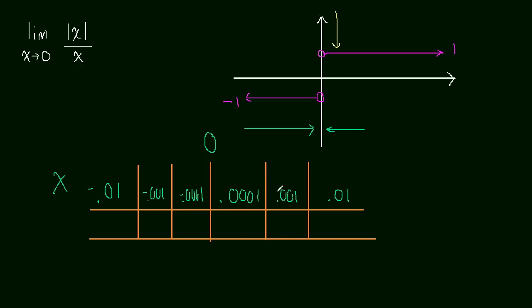So these numbers, the positive numbers from the right side, we're squeezing in on 0. And from the left side of 0, we're squeezing in on 0. What happens to f of x?